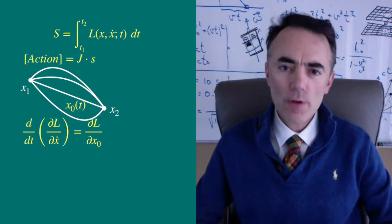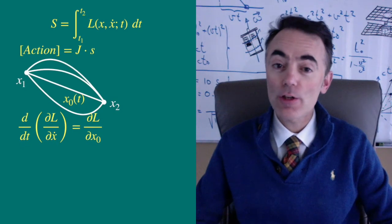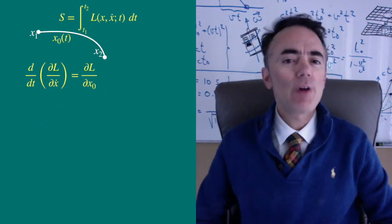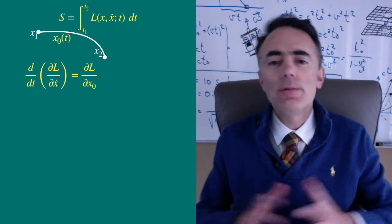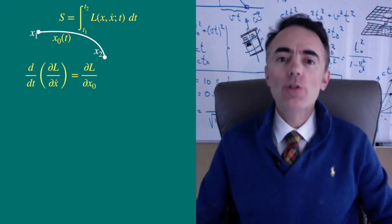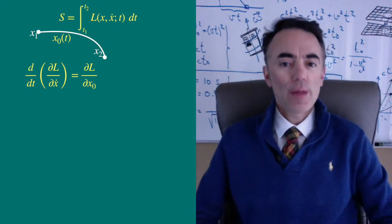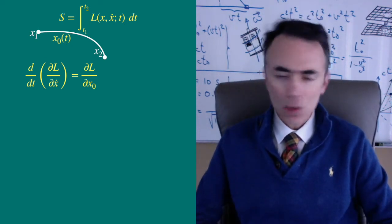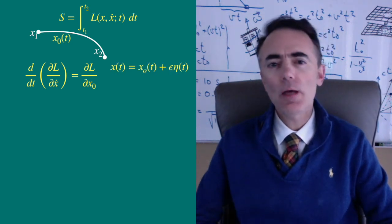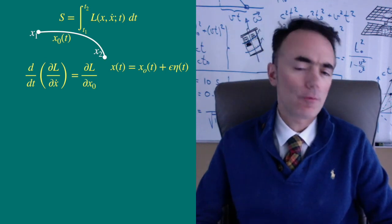If this function yields a stationary value, then any other function very close to x0 will yield the same value up to first order. The differences are second order or higher. So we can write for that other function x of t close to x0 of t, x of t equal to x0 of t plus epsilon times eta of t.